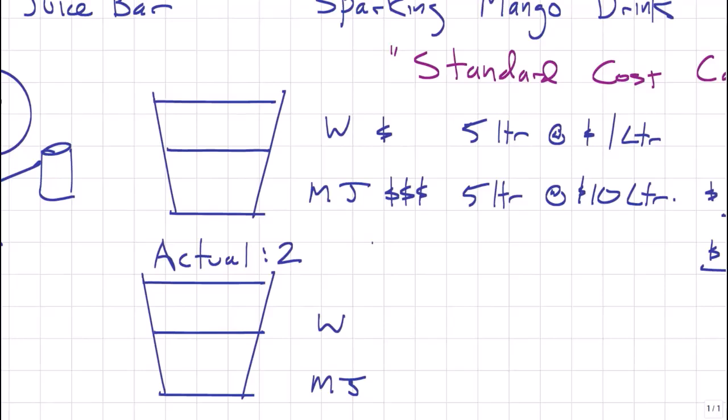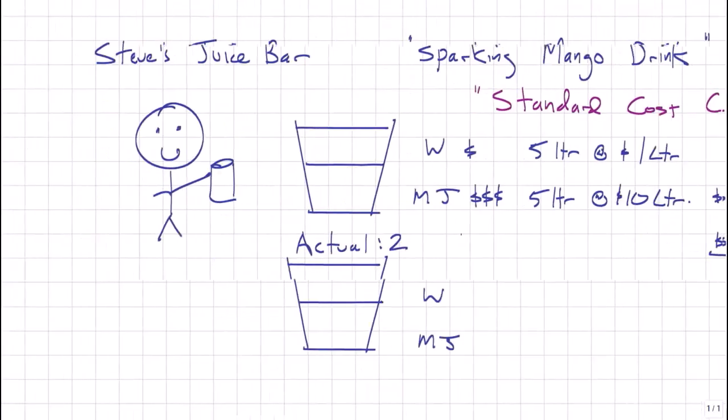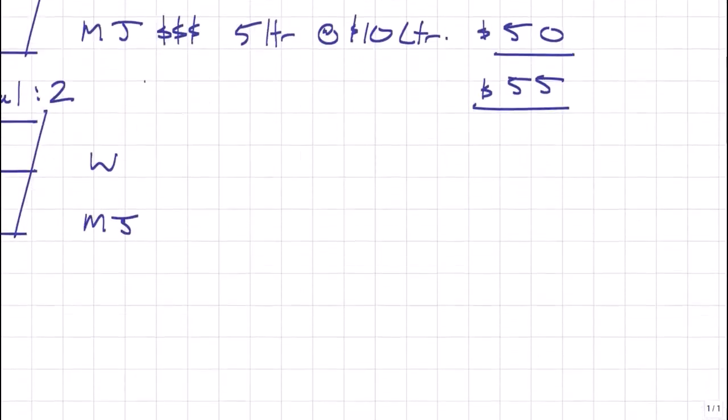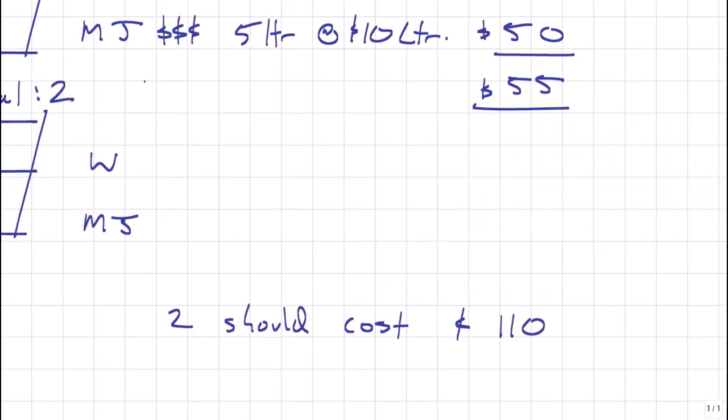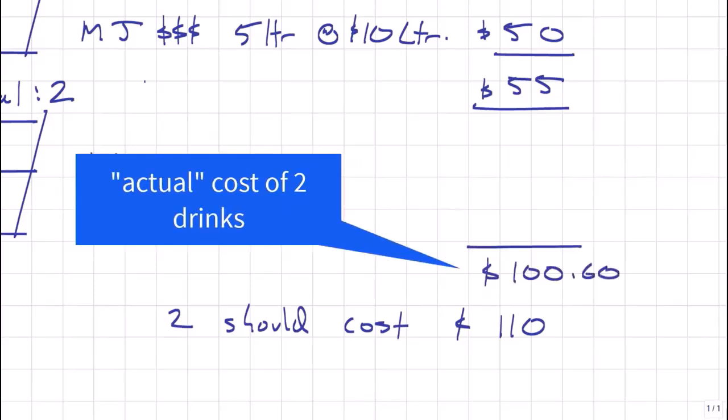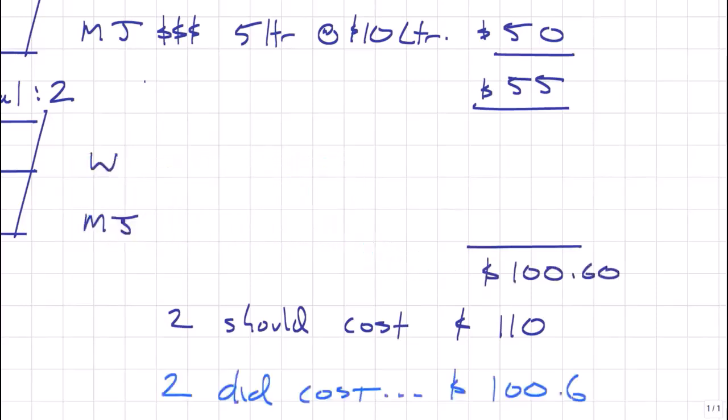Right now, we're trying to understand how much should two drinks cost? How much did two drinks cost? So at this point, we could answer that question, couldn't we? Two should cost $110. And I'm going to give you some more information right now. I'm going to tell you that two drinks actually cost $100.60. Well, look at that production cost less than expected. That is great news. So we're happy. We would like to understand what we did well so we can replicate those good results next time we make drinks.